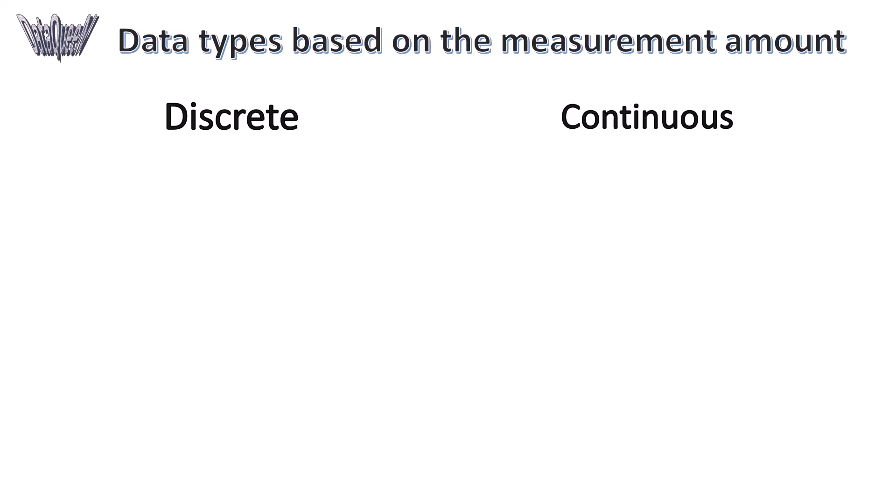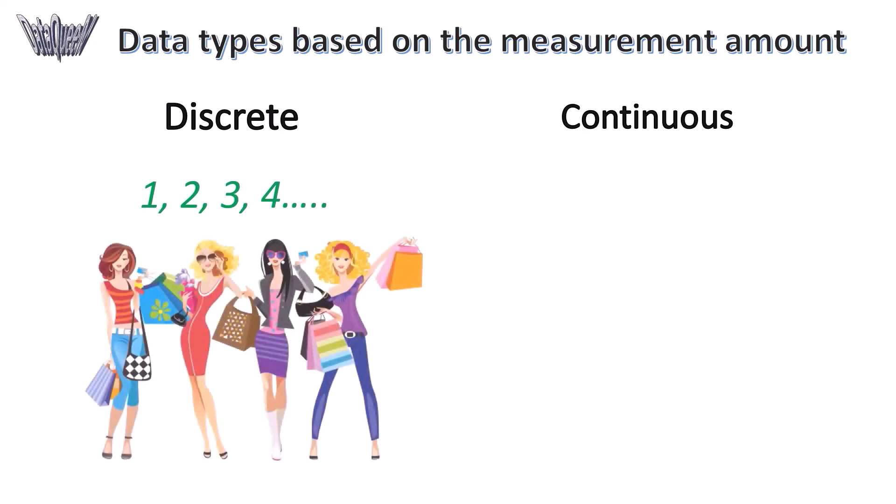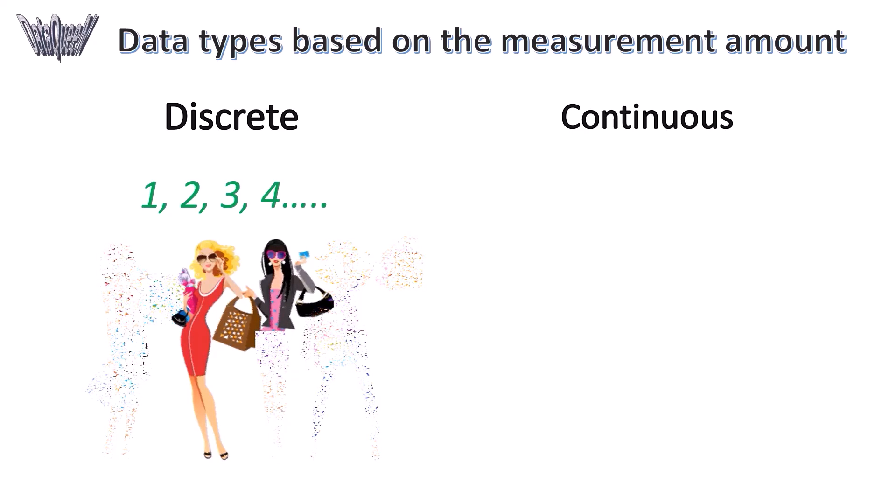Discrete means that you can only have specific amounts of the thing that you're measuring, typically integers and no values in between those amounts. There must be a whole number of people visiting a store. You can't say one and a half person.